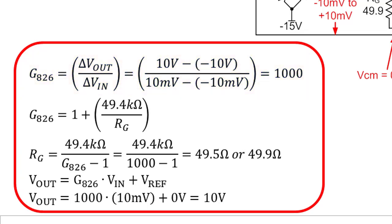The gain for most INAs can be set with an external resistor, and the equation for the gain relationship is given in the data sheet. Using the equation from the INA 826 data sheet, we find the closest standard value resistor to be 49.9 ohms. The INA's output relationship is given by the equation Vout equals gain times Vin plus Vref.